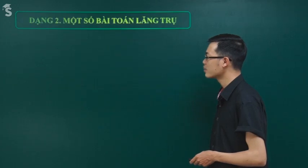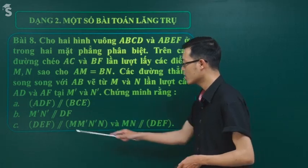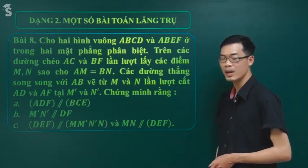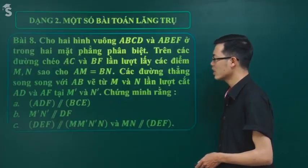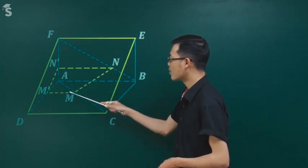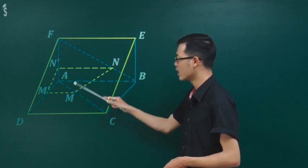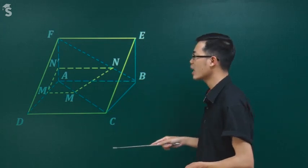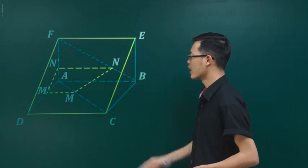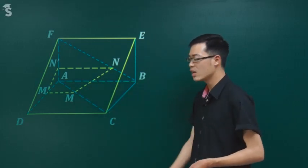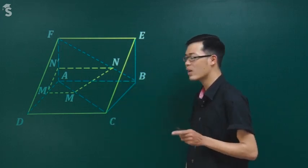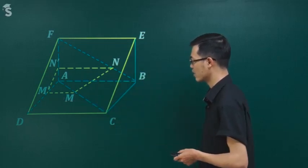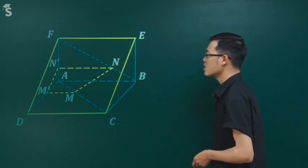Bây giờ tiếp tục xét câu C: chứng minh mặt phẳng DEF song song mặt phẳng MM'N'N. Chứng minh được ý đầu thì tự nhiên làm được ý sau. Các em cùng nhìn hình vẽ. M'M N'N nó là một cái hình thang vì MM' song song NN'. Mặt phẳng DEF cũng chính là mặt phẳng CDEF vì CD song song EF nên CDEF đồng phẳng.